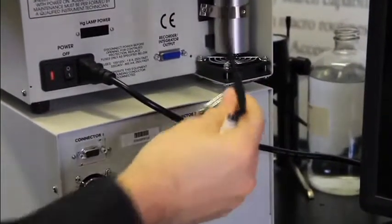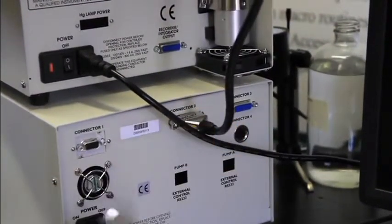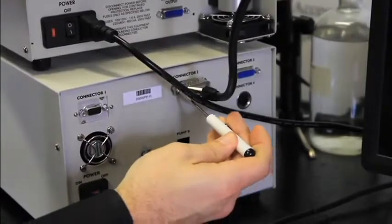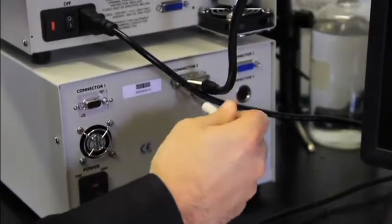The cord that is hardwired in the detector chassis on top goes into connector 2 on the pump chassis. All connections should be screwed in for optimal connection.